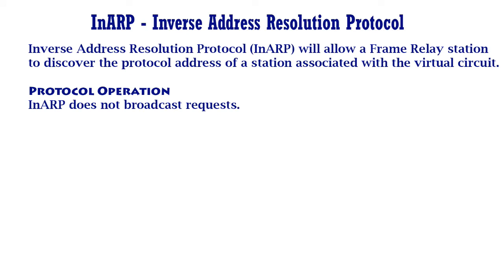Basic InARP operates essentially the same as ARP, with the exception that InARP does not broadcast requests. This is because the hardware address of the destination station is already known. When an interface supporting InARP becomes active, it should initiate the InARP protocol and format InARP requests for each active PVC for which InARP is active. A requesting station formats a request by inserting its source hardware and source protocol addresses, along with the known target hardware address, then zero-fills the target protocol address field.